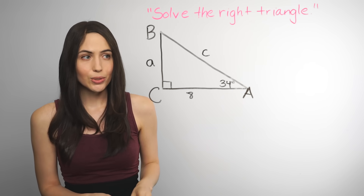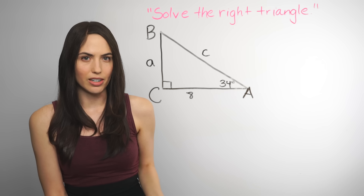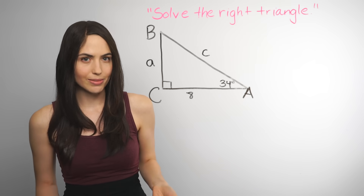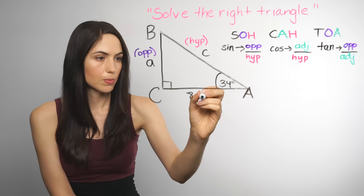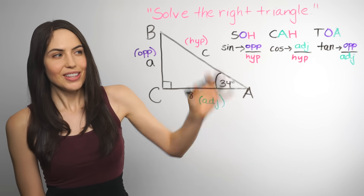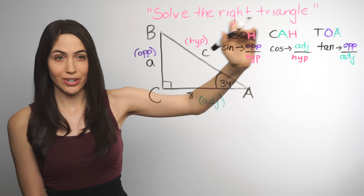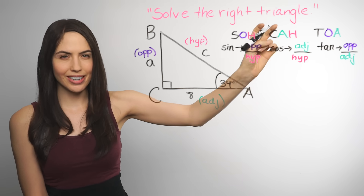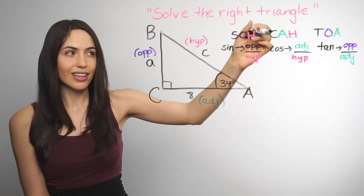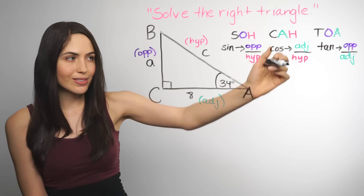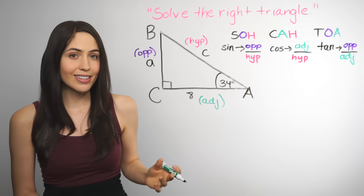You can use a trig function to find each of these sides, but how do you know which trig function — sine, cosine, or tangent — to pick? These are three of the main trig functions. SOHCAHTOA is a mnemonic device to help you remember: sine of an angle equals opposite over hypotenuse, cosine equals adjacent over hypotenuse, and tangent equals opposite over adjacent.